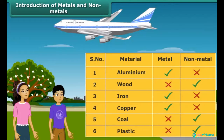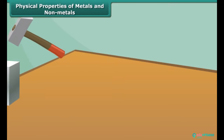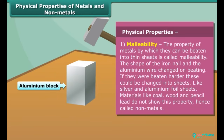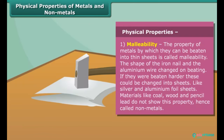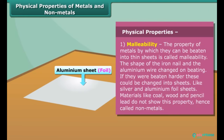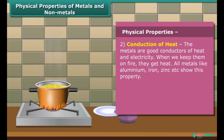Friends, we use many things in our daily lives; these are made up of metals and non-metals. Now let's know about their properties. First we look at physical properties. The first property of metal is its malleability — by this property, metals can be beaten into thin sheets. Non-metals don't show this property.